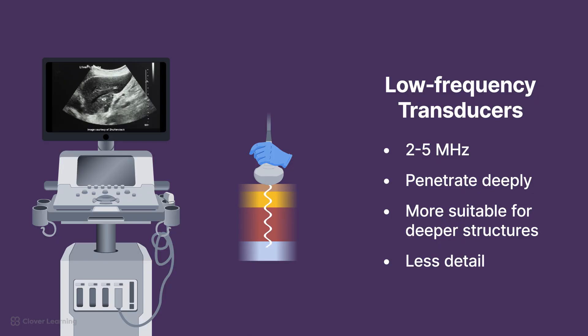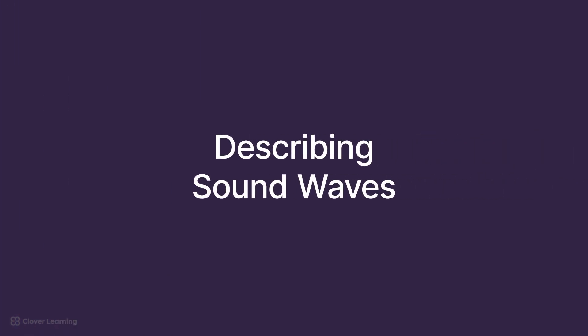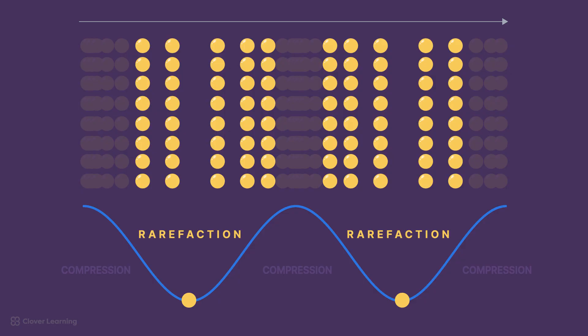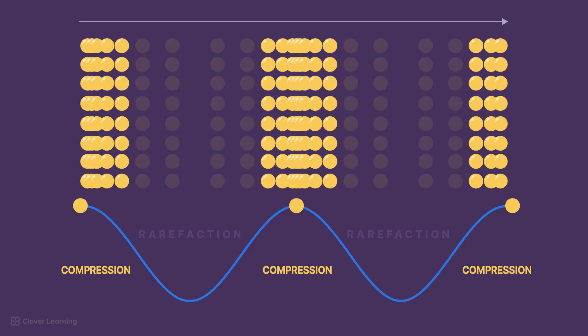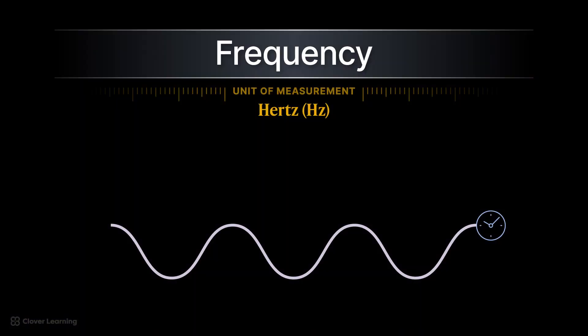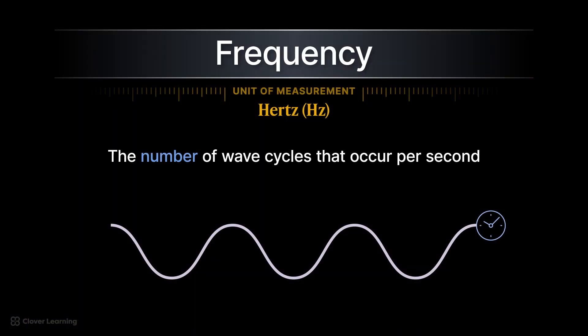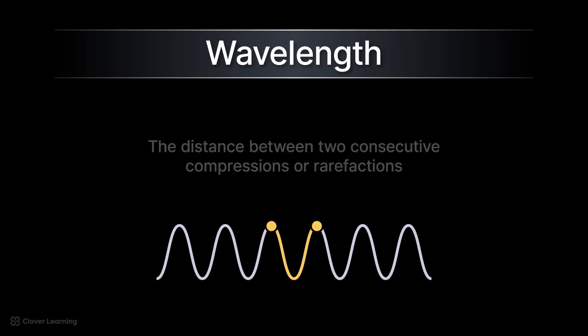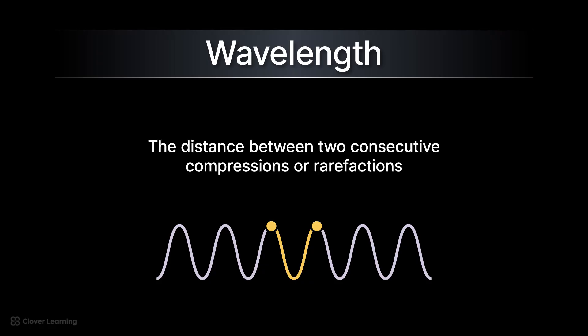Remember, this is just an overview, and we will dive deeper on each subject in their own lessons. Next, there are terms that describe sound waves, like rarefaction, compression, frequency, and wavelength. Rarefaction is the portion of a sound wave where the particles are spread apart, while compression is the portion of a sound wave where particles are pushed together. These terms describe how sound waves are propagated through a medium, like body tissue. Frequency is the number of cycles per second, measured in Hz. Wavelength is the distance between two consecutive compressions or rarefactions.